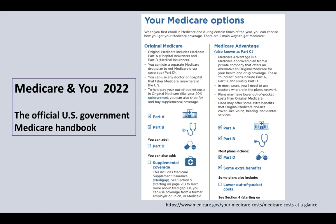Before getting into the enrollment periods, let me show you the different parts of Medicare. This is taken from the official U.S. government Medicare handbook. You can see Original Medicare, and then Medicare Advantage plans. Once you enroll in Original Medicare you can switch to Part C later. For now, focus on Part A, Part B, and Part D, and also Medigap supplement plans.